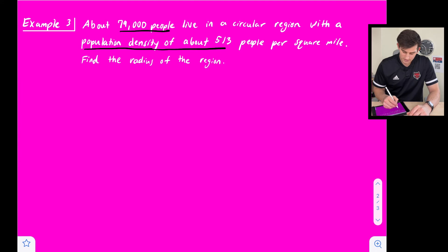So we can say population density, so that's 513 is equal to the number of people, 79,000, and that's divided by pi r squared. So now essentially what we're going to do is solve for r now.